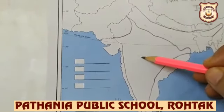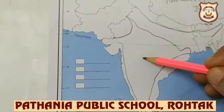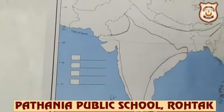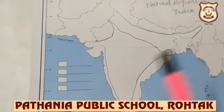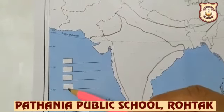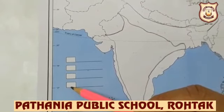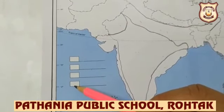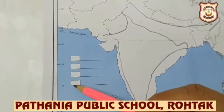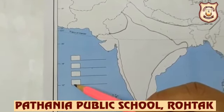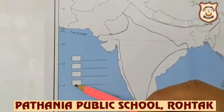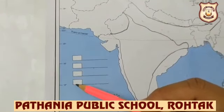Now we'll show the plateau. The plateau is made up of rocks and minerals — this region is very rich in rocks and minerals. We'll show these regions on the map using an index. On the map you'll see small boxes — these are called the index. The index is an indicator, a guide. It helps us understand the map. Whenever you draw a map, you should always make an index and a heading.